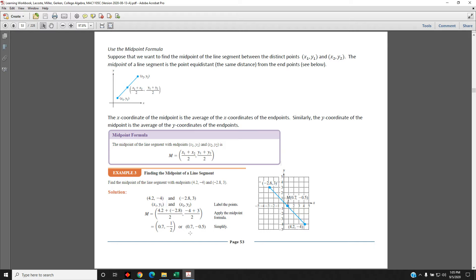Now add and then divide. 4.2 plus negative 2.8 equals positive 1.4, and then when you divide it by 2, you get positive 0.7. Negative 4 plus 3 is negative 1, and then when you divide it by 2, you get negative 1 half, which as a decimal is negative 0.5.